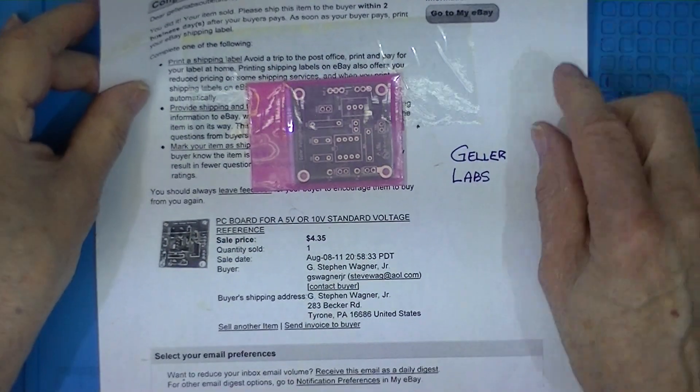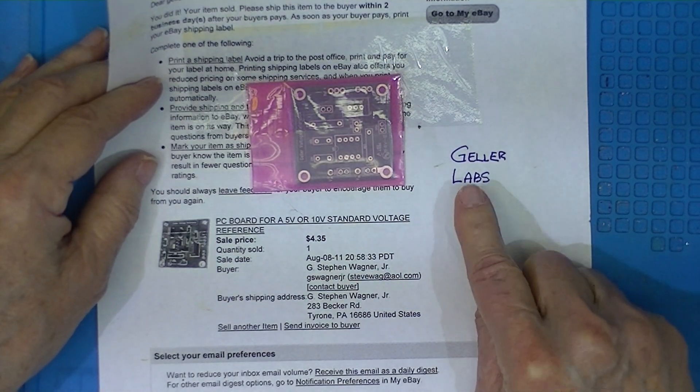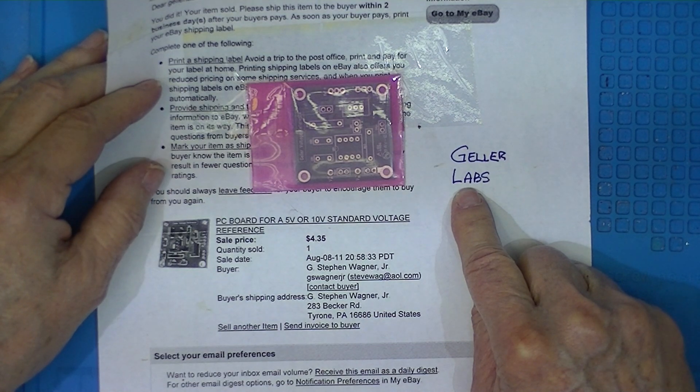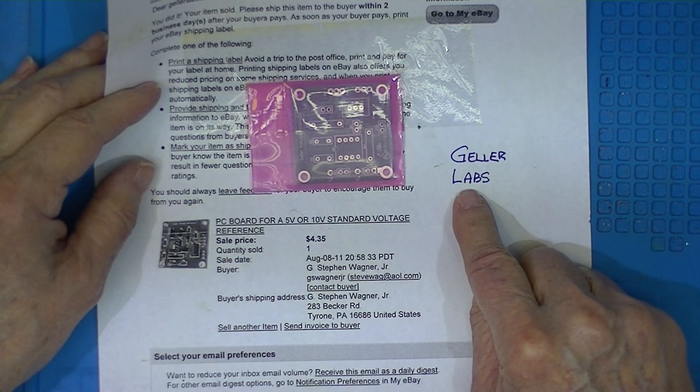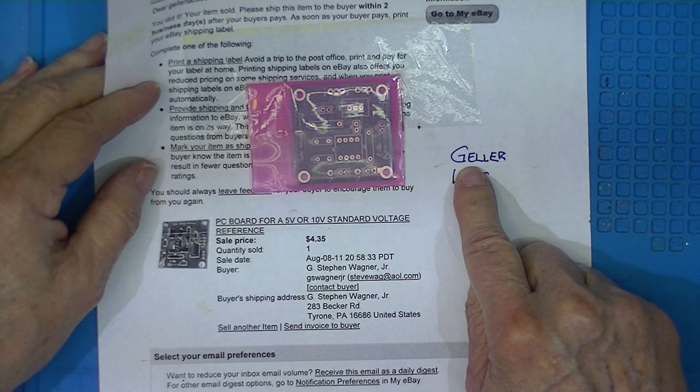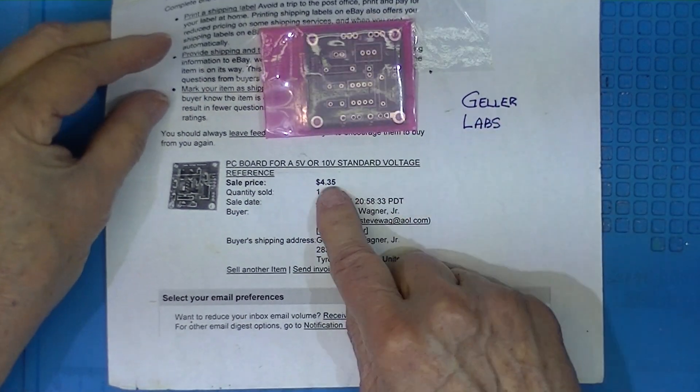He operated a place called Geller Labs and it was a true electronics laboratory—not just a collection of old U.S. and new Chinese equipment, not a hobby shop. A true laboratory. And he was a very knowledgeable gentleman. And he sold these circuit boards for $5.